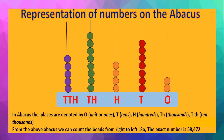Now count the beads of the tens place spike: one, two, three, four, five, six, seven. So it consists of seven beads.